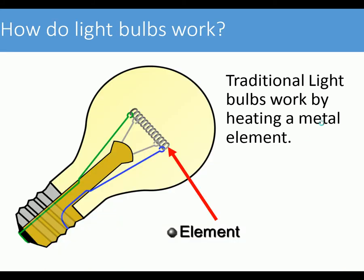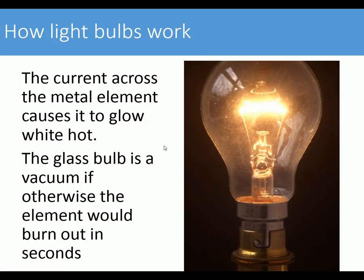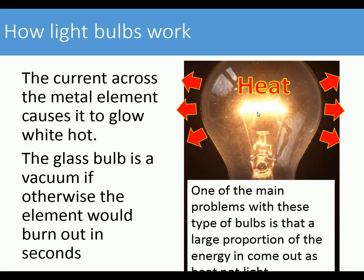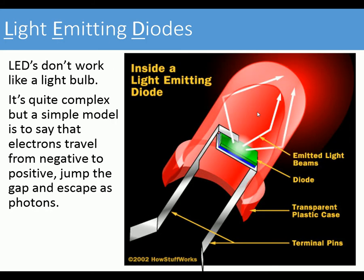So how do light bulbs work? A traditional light bulb has a coiled metal element. A current passes across the element and causes it to glow white hot. The glass bulb is in a vacuum, otherwise the element would burn up in the oxygen of the atmosphere. The problem is that a large proportion of the energy into the light bulb comes out as heat, not light.